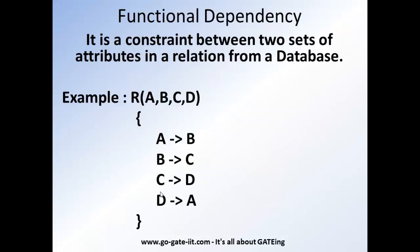Next comes functional dependency. Functional dependency is a constraint between two sets of attributes in a relation from a database. For example, for a given relation R having attributes A, B, C and D, a set of attributes from R is said to be functionally determined another set of attributes only from R.